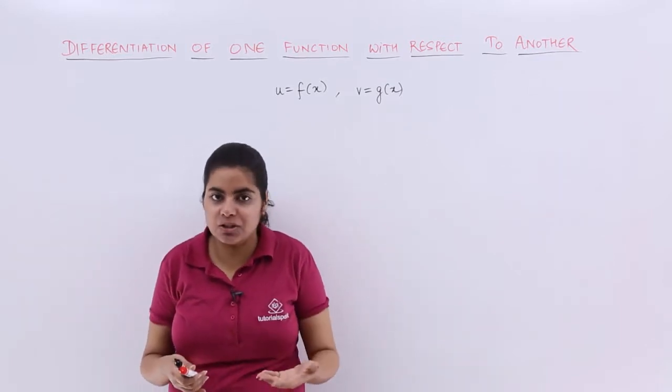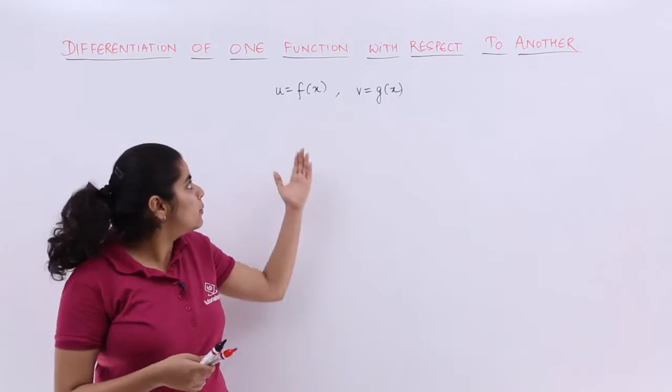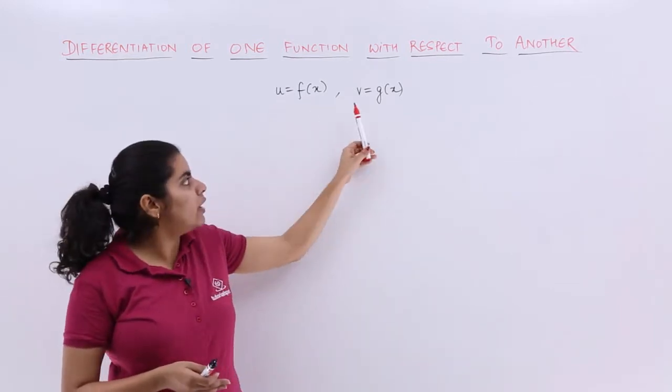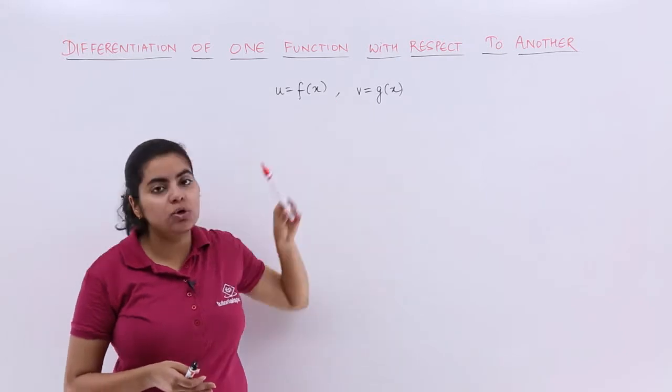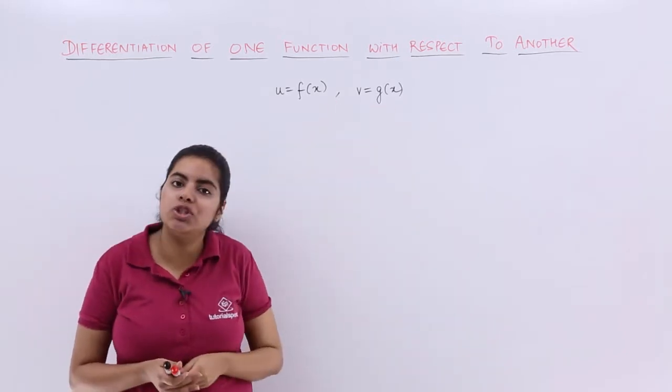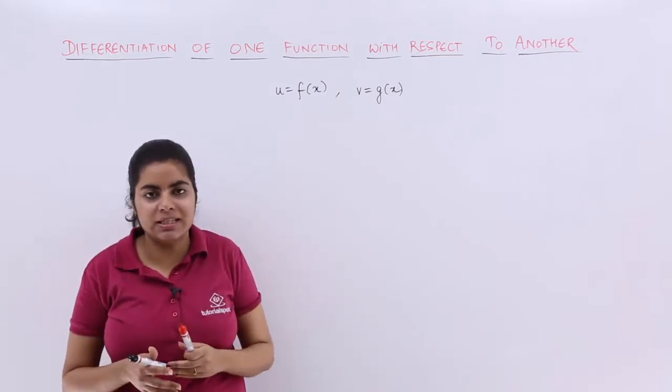So what is it actually about? Suppose I have two functions, namely u and v, where u is a function of x and v is also a function of x. They are u equals f(x) and v equals g(x). Now how to go about it?